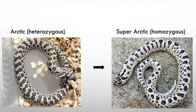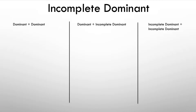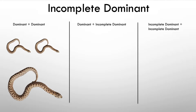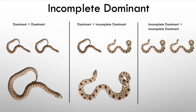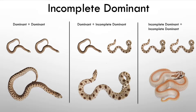So to summarize before the Punnett squares: a dominant gene combined with a dominant gene gives a wild-type looking animal. A dominant combined with one incomplete dominant anaconda gives a conda — a pattern reduction animal. And when you have two copies of the anaconda gene, you get the super form, which is a complete pattern reduction.